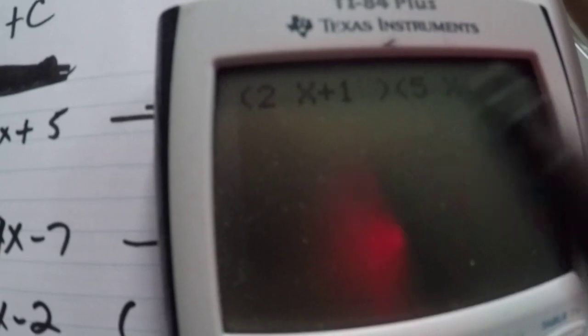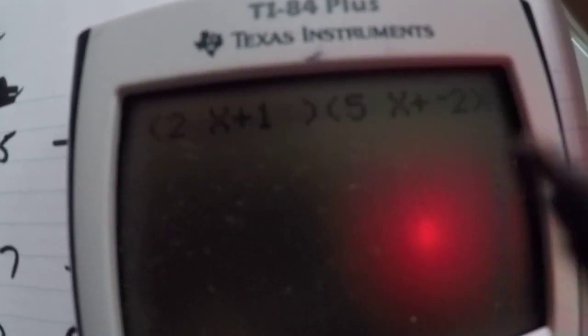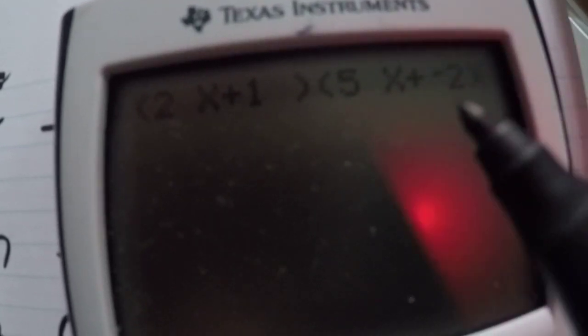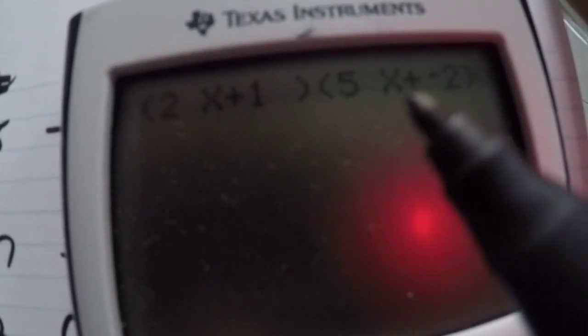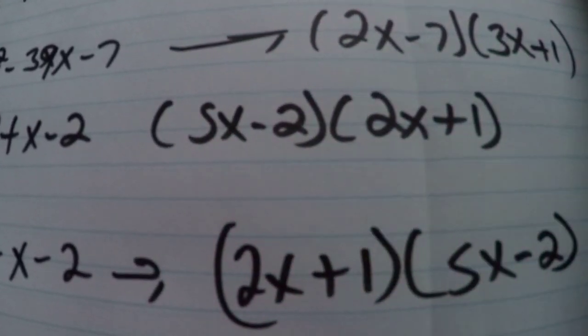So now we have 2x plus 1 parentheses, 5x minus 2 parentheses. Remember we got plus and minus is a minus 2. That's how the calculator do it. So 5x minus 2, 2x plus 1.